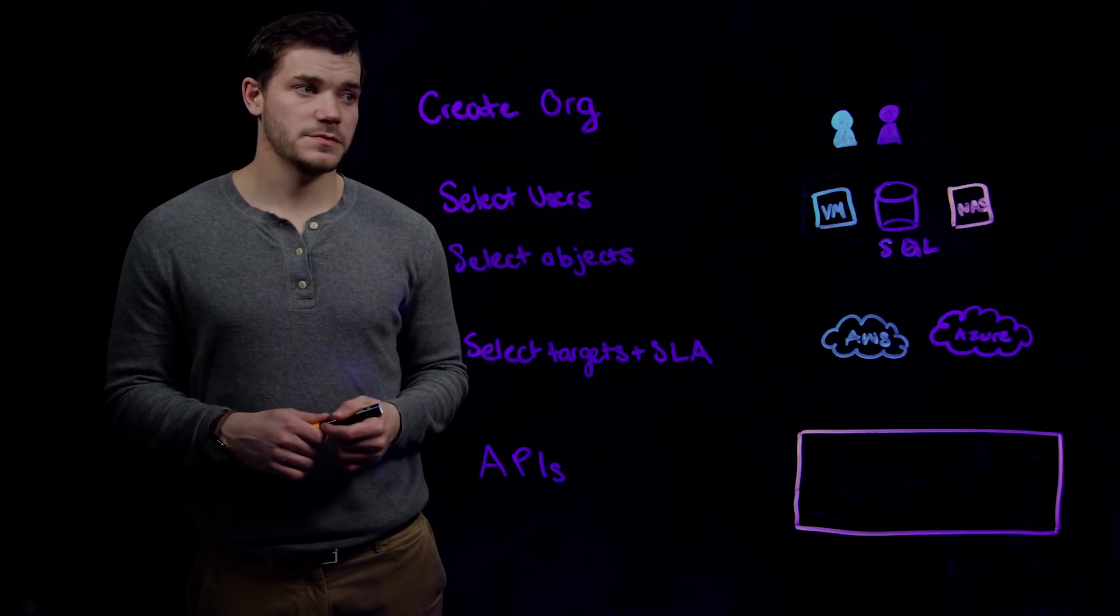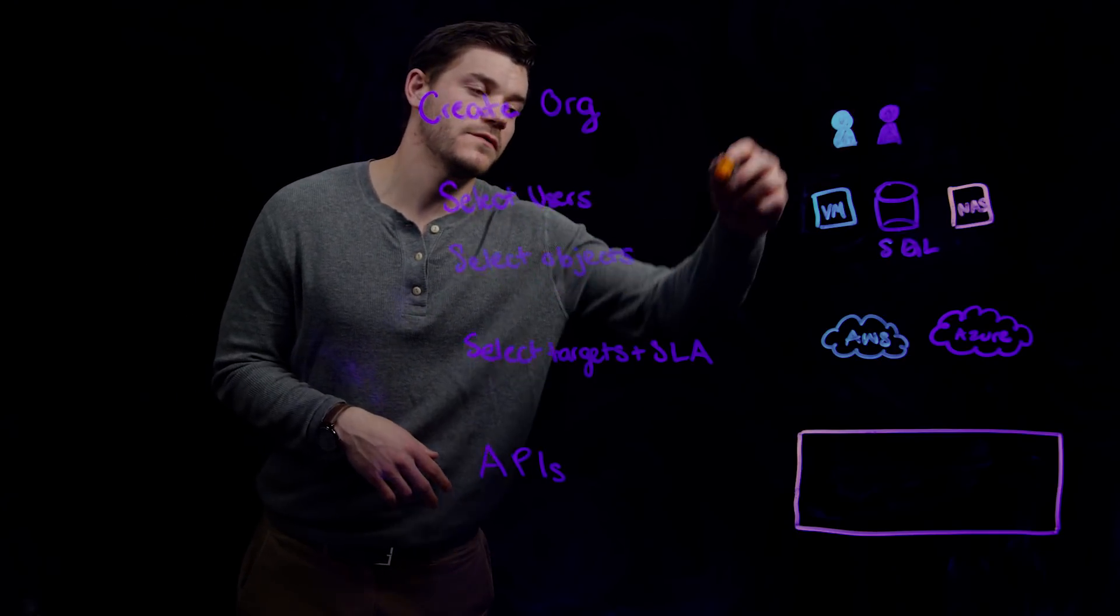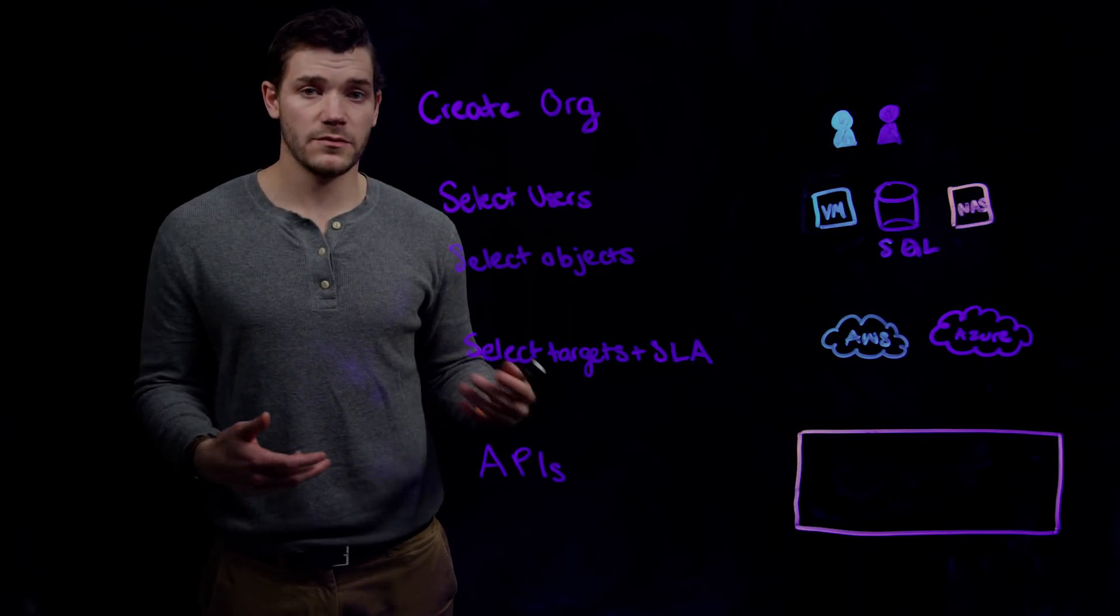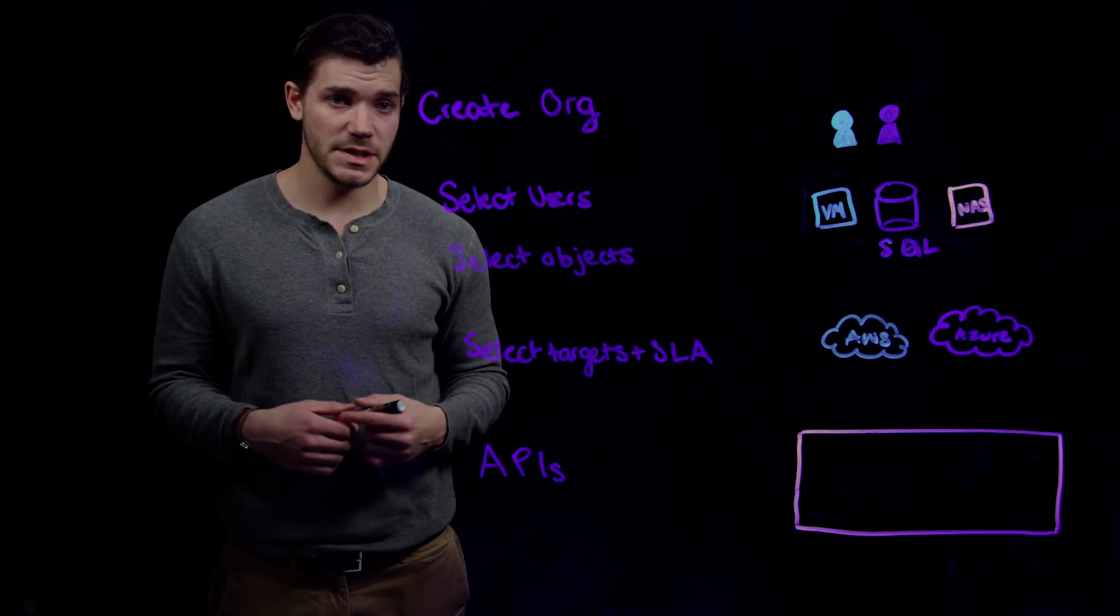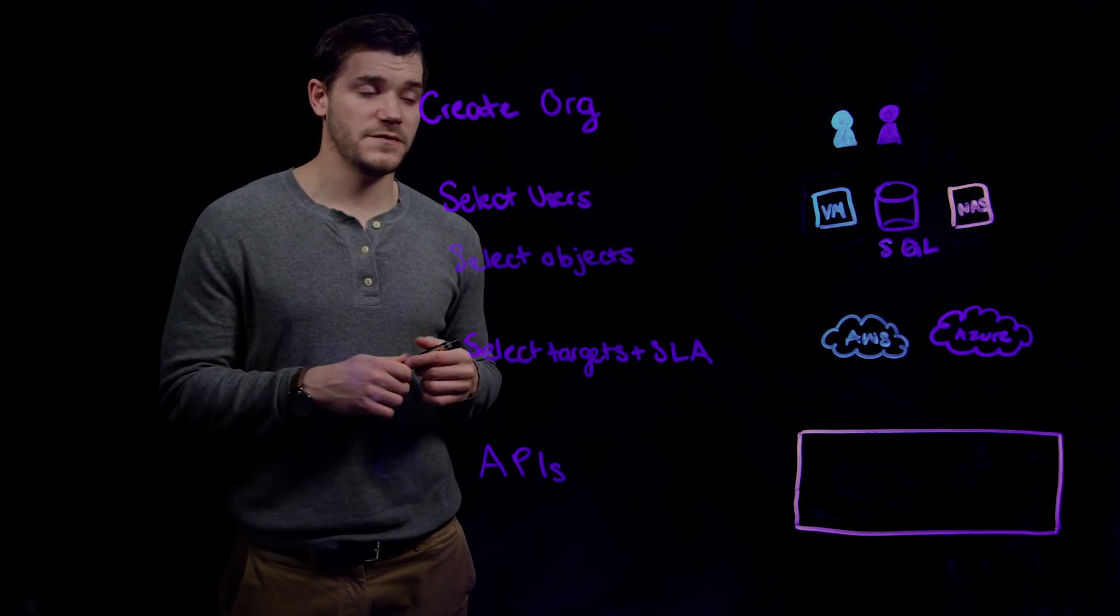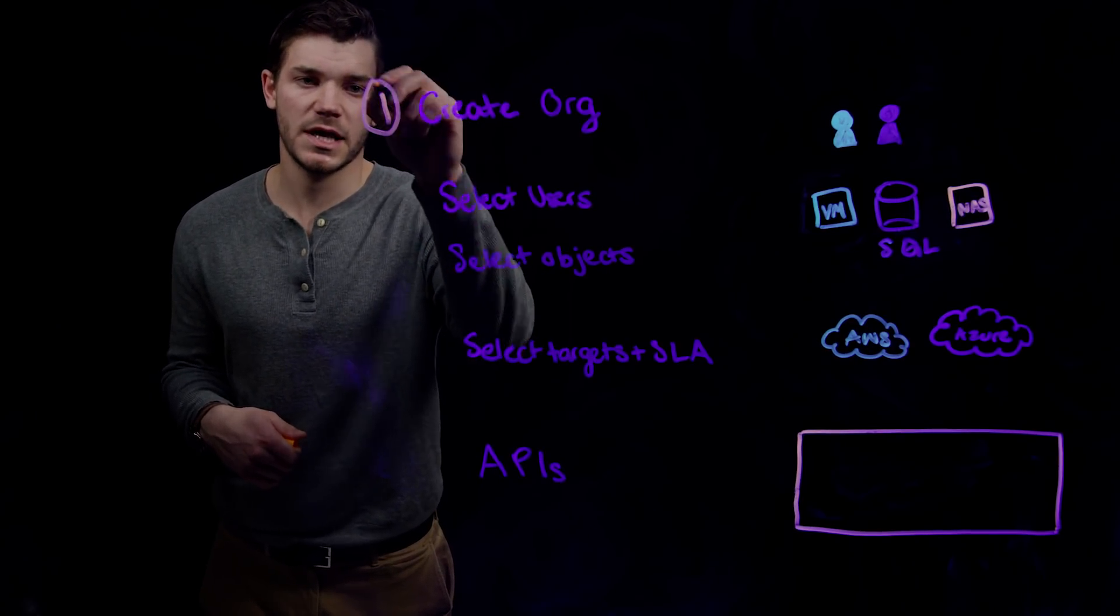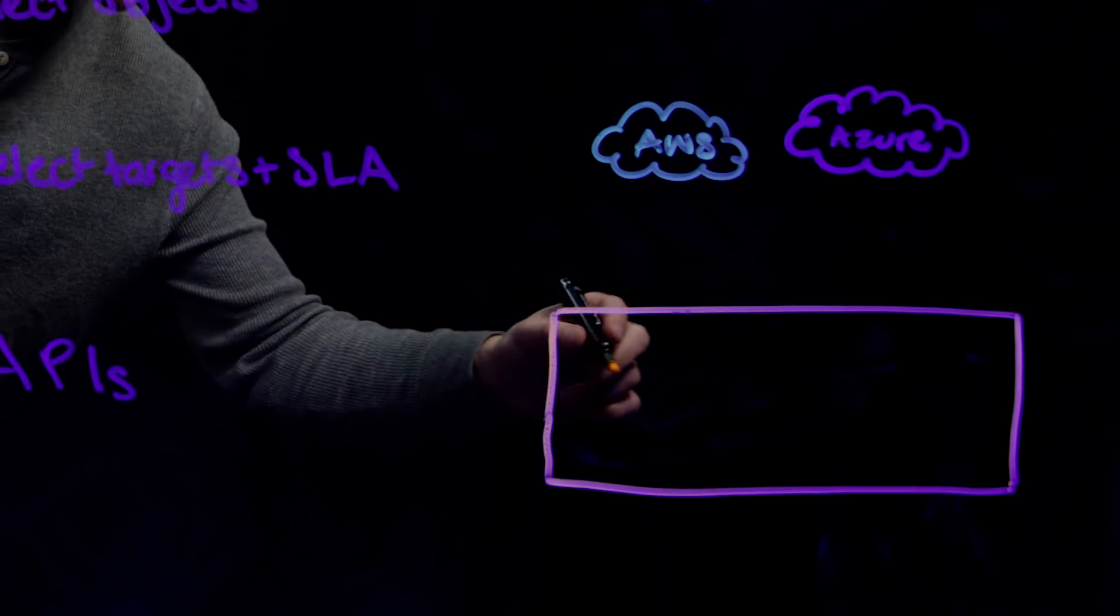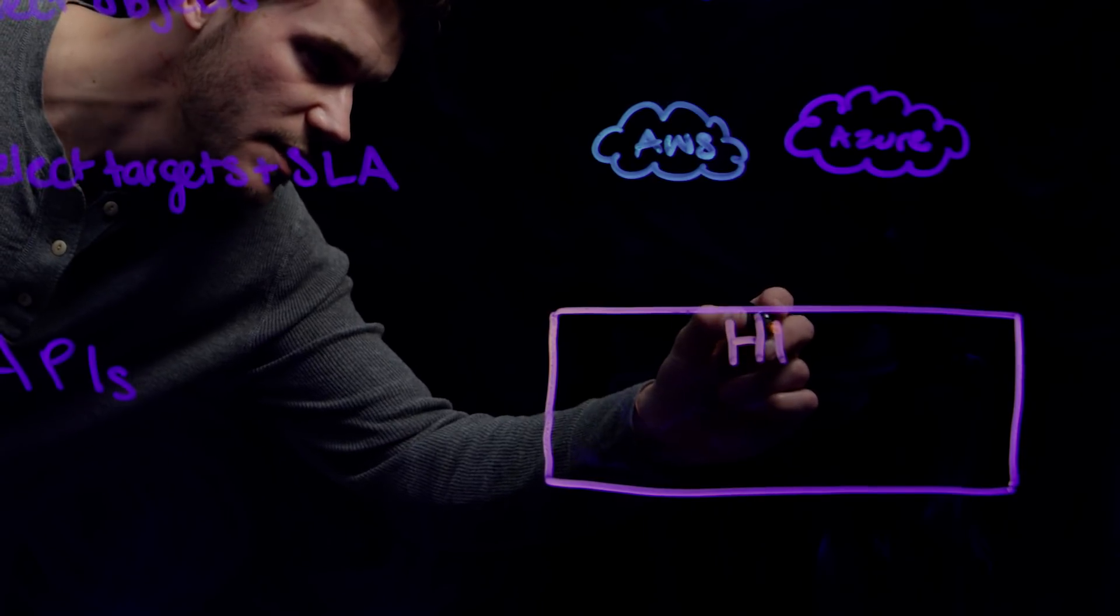Let's walk through how this works. You can think of the Rubrik platform as a large collection of resources. Like the rest of the Rubrik platform, we've enabled multi-tenancy to be as easy as possible. First, we'll create a new organization. You can think of an organization as a virtual collection of resources within the broader Rubrik environment. Step one is to create your organization and give it a name.